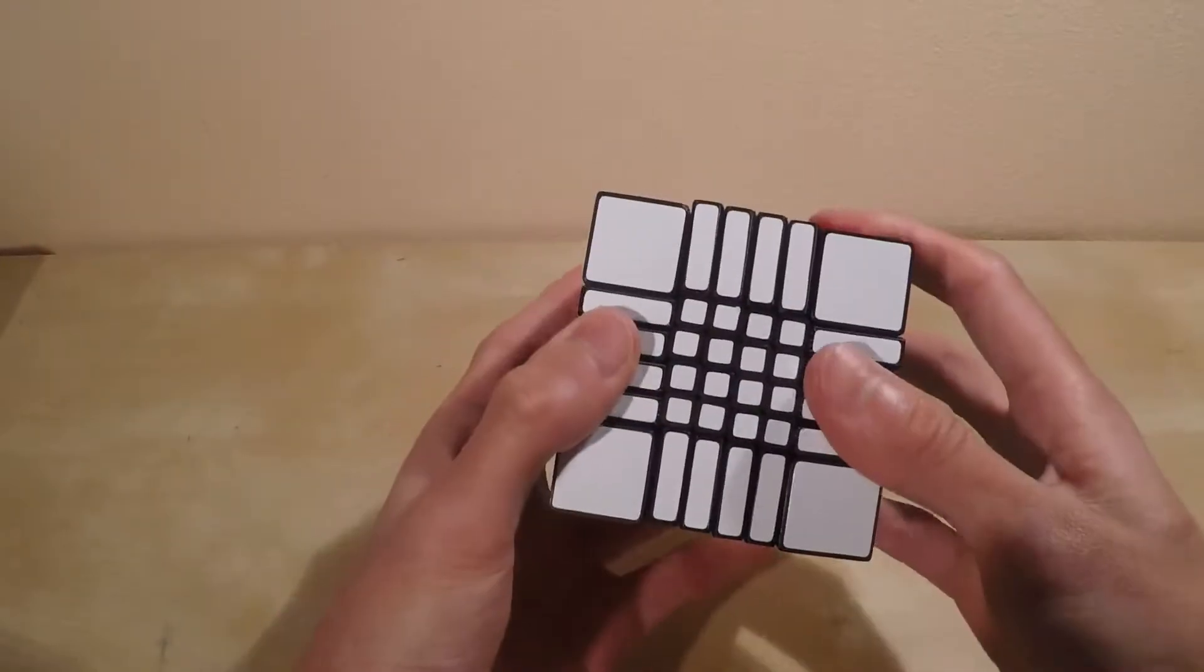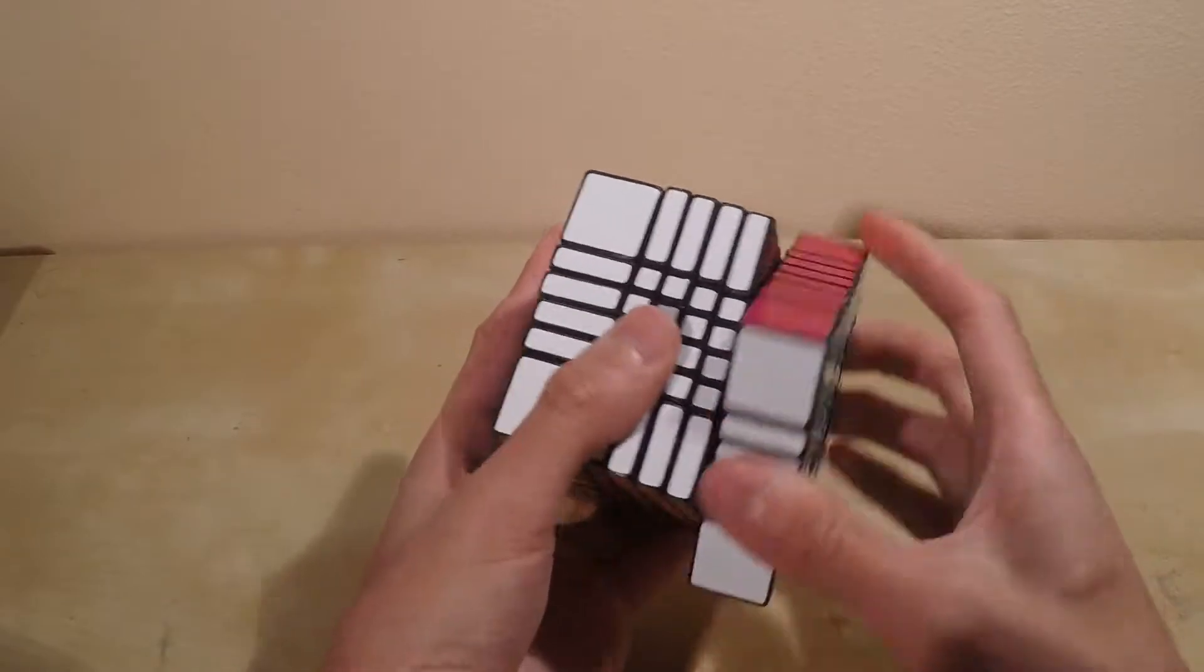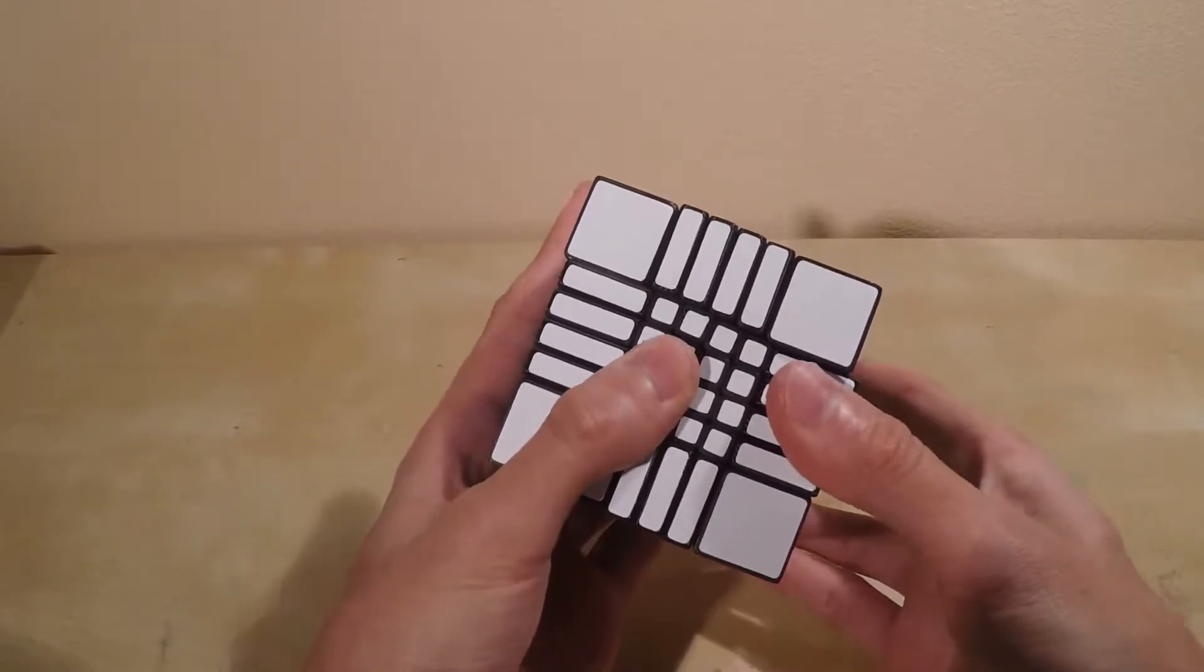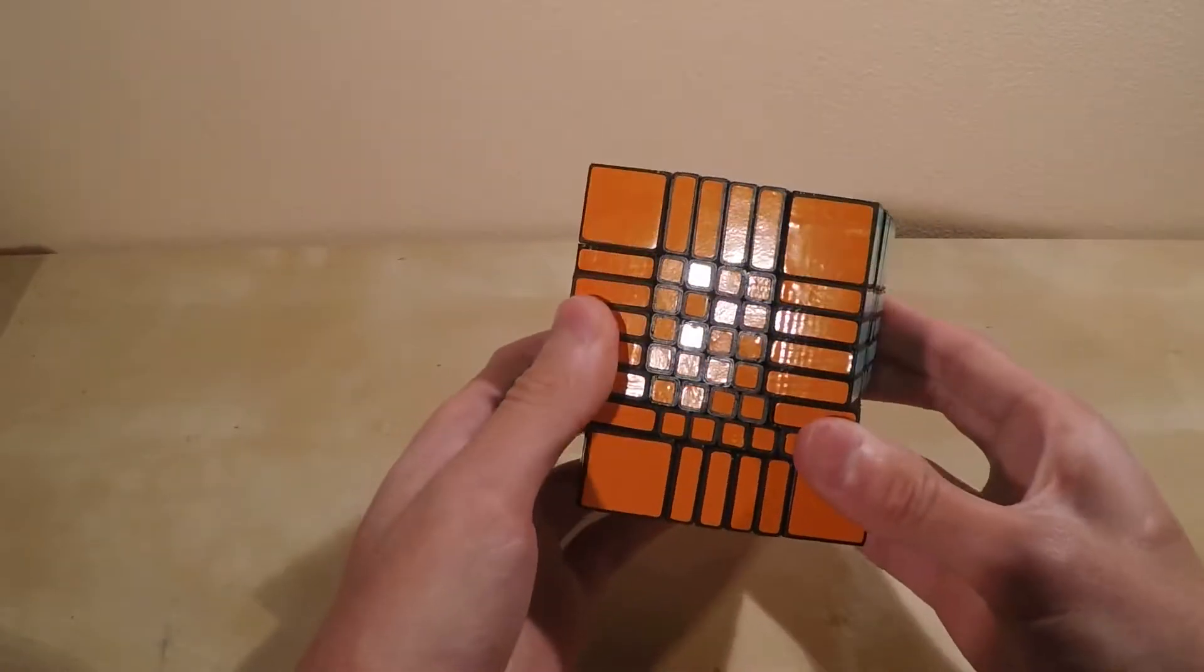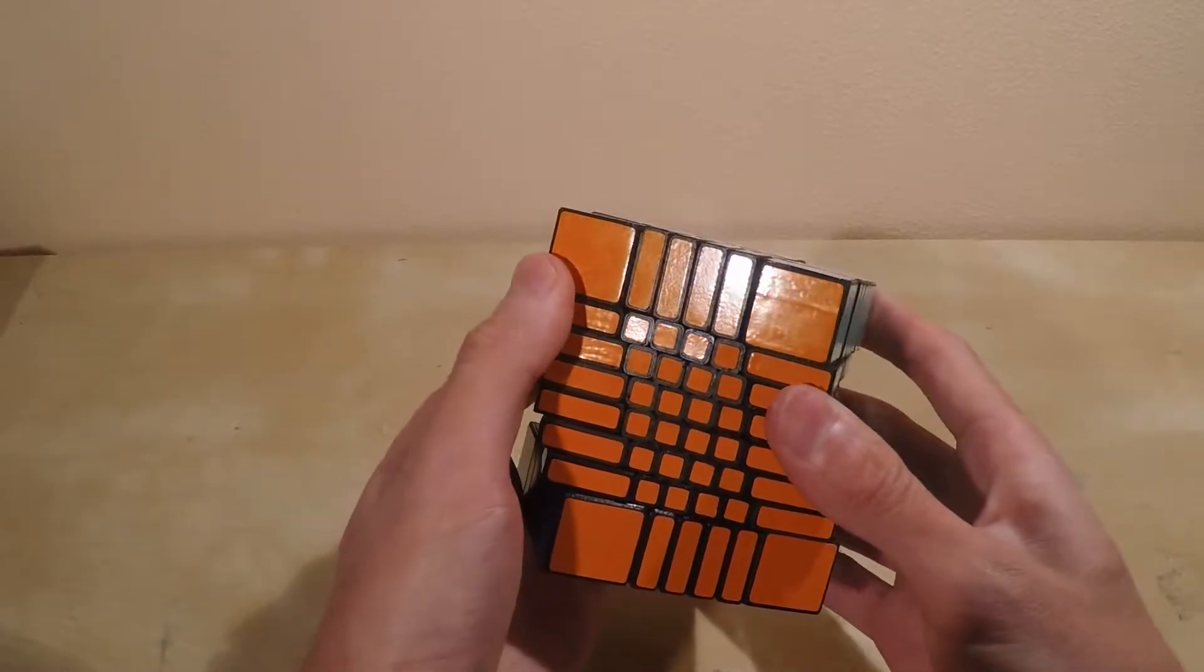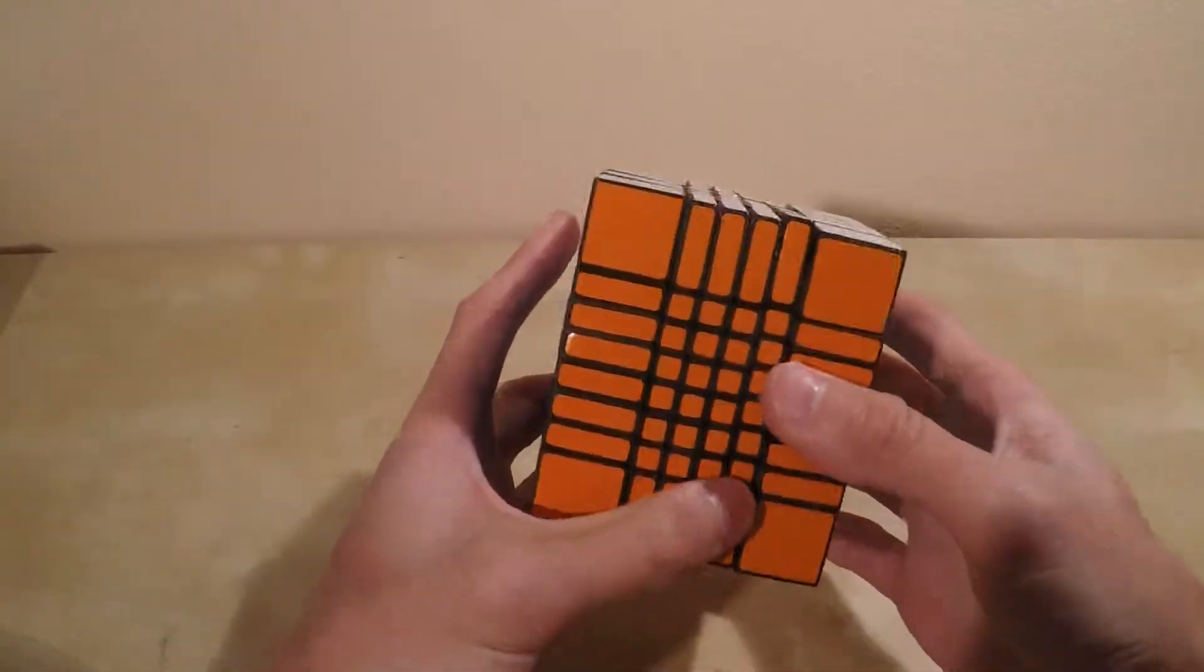In terms of reverse, it can do a little bit, not too much. The layers pretty much have to be aligned, but if they're not, it'll just glide right through. In terms of if all layers are shifted, it can cut through that too.